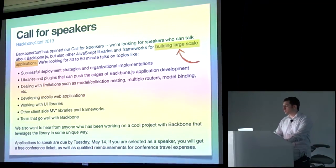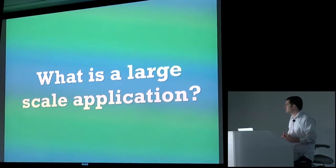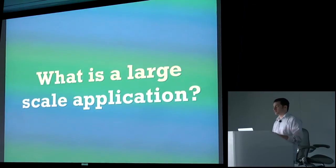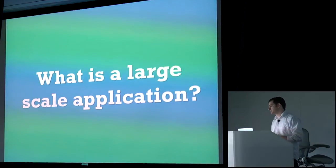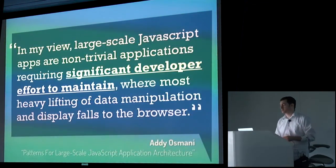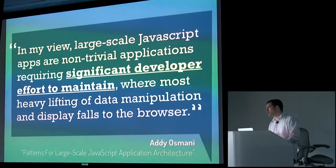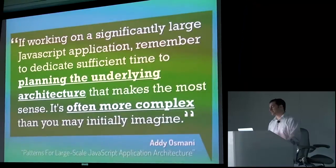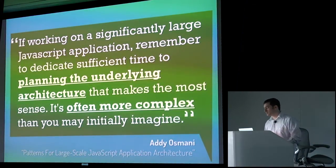Let's start off by exploring the definition of a large-scale application. Do you think visual complexity, like a lot of moving parts on the page? Or maybe it's a really advanced data synchronization model — real-time collaboration like Google Docs? Or maybe you think in terms of size — a codebase that reaches 100,000 lines. Adios Mani in his paper on patterns for large-scale JavaScript application architecture says large-scale JavaScript apps are non-trivial applications requiring significant developer effort to maintain, where most heavy lifting of data manipulation and display falls to the browser. He adds that you should dedicate sufficient time to planning the underlying architecture — it's often more complex than you initially imagine.